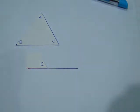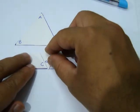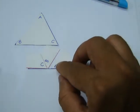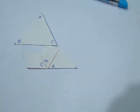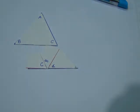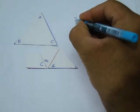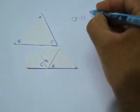This is angle C, angle B, and this is angle A. These are the three angles of the triangle, and they all fitted together and completely make a 180 degree angle. This shows that the sum of the three angles of a triangle is 180 degrees. Now we can express this as (3 - 2) × 180.